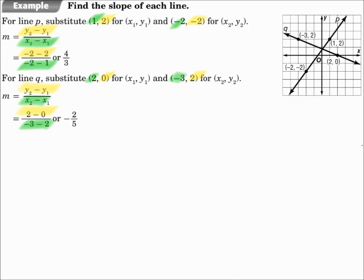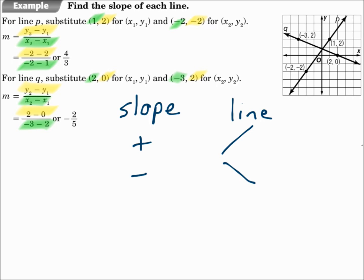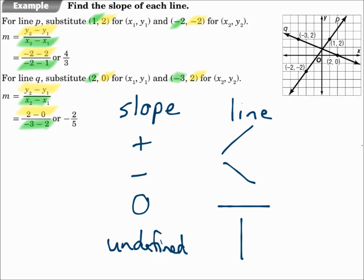When you're finding slope, remember that if the slope is positive, the line will be slanting upward left to right. If it's negative, it will go downward left to right. If it's a slope of 0, it's horizontal. An undefined slope is vertical — undefined is when the denominator is 0. So it's a good way to check your answer: if your slope is negative, it should tip down, like line q. Line p had a positive slope and it slants upward.